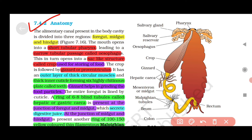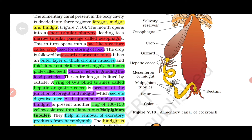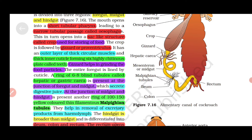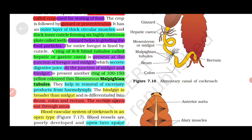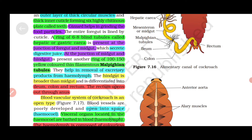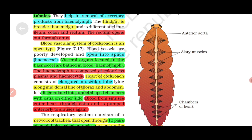7.4.2 Anatomy: The alimentary canal consists of foregut, midgut, and hindgut. The foregut includes short tubular pharynx, narrow tubular passage called esophagus, sac-like structure called crop used for storing food, and gizzard or proventriculus. The gizzard has an outer layer of thick circular muscles and thick inner cuticle forming six highly chitinous plates called teeth. The gizzard helps in grinding food particles. A ring of six to eight blind tubules called hepatic or gastric caeca is present at the junction of foregut and midgut and secretes digestive juice. At the junction of midgut and hindgut is a ring of 100 to 150 yellow colored thin filamentous malpighian tubules. The hindgut is broader than midgut and consists of ileum, colon, and rectum. The rectum opens out through the anus.